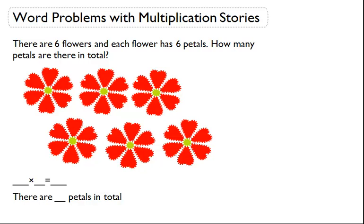So these are the flowers here and we want to find out how many petals each one of these flowers has. So we're going to circle the important words — whenever we have a word problem we should try to circle or notice the important numbers. So six flowers and each flower has six petals, and we know the question is the total that we want to find out.